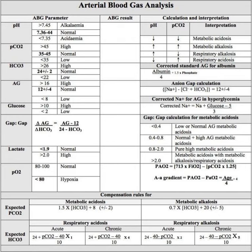Just briefly reminding folks that below 7.35 is acidemic and above 7.45 is alkalemic. You start at the pH, you determine if they're acidotic or alkalemic — if they're acidic or basic. And then you go down to look at the PCO2. If the PCO2 is high, assuming that they're acidotic, if their pH is low but their PCO2 is high, that's a respiratory acidosis.